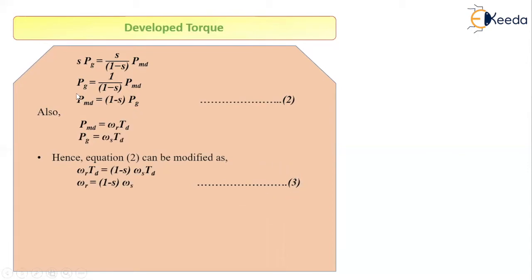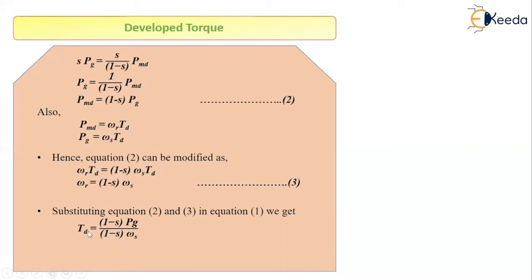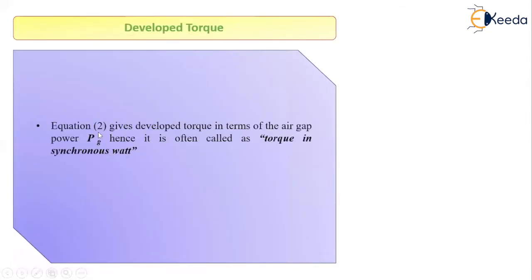In equation 1, there were two parameters: PMD and ωr. We have found values for both in equation 2 and equation 3. Substituting equations 2 and 3 into equation 1, we get: Td = (1 − S) × PG / [(1 − S) × ωs]. The (1 − S) terms in the numerator and denominator cancel, giving us: Td = PG / ωs. This is the equation for the developed torque. This gives the developed torque in terms of air gap power PG, which is why this torque is also called torque in synchronous watts.